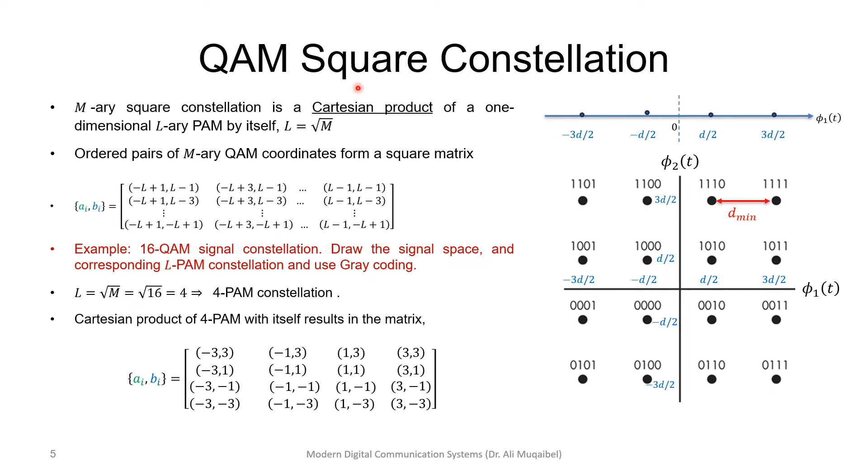For the QAM square constellation, we can think of it as a 2D extension of 1D. M-ary square constellation is a Cartesian product of a one-dimensional L-ary PAM. If we have L of them, that's 4, which is the square root of 16, we can create this constellation.